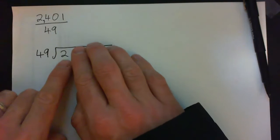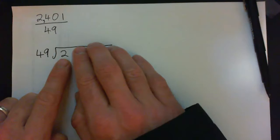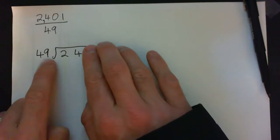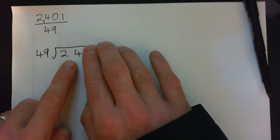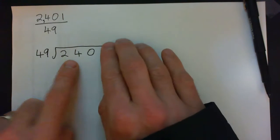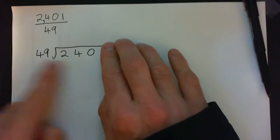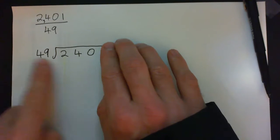So 49 into 2 won't go, too small. 49 into 24 won't go, 24 is smaller. So we move over and we see 240. So our first thing is to try to go 49 into 240 is how many times.